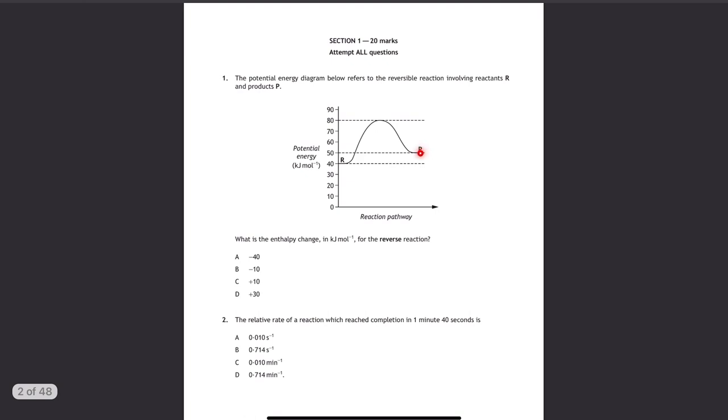For the reverse reaction, we're starting here at the product side and going over the energy hill, as I like to call it, down to the reactants, which are the products for the reverse reaction. The enthalpy change is the gap between the energy levels of the products and the reactants.